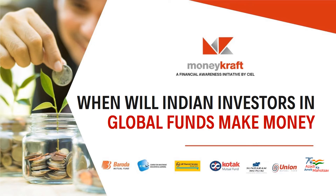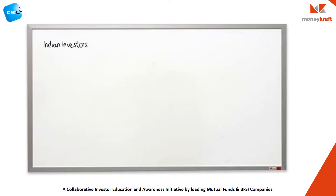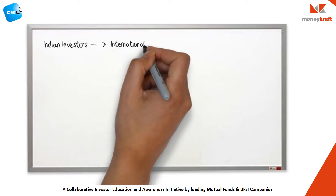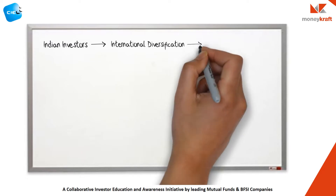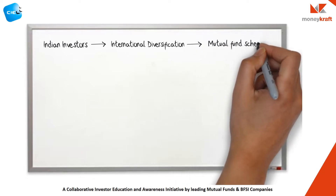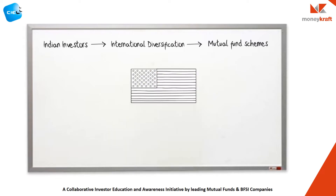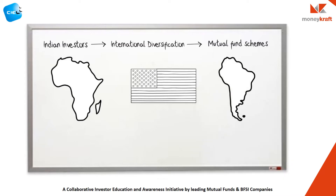When will Indian investors and global funds make money? Several mutual fund schemes are offered to Indian investors with the promise of international diversification benefits. The primary return to the investor is from the portfolio, which may be invested in equity shares in the US, gold mining companies in Africa, or blue chip stocks of Brazil.